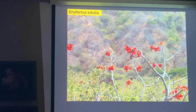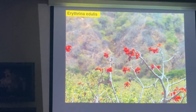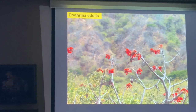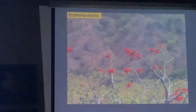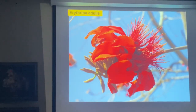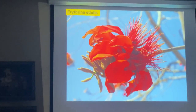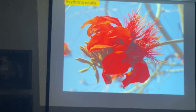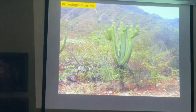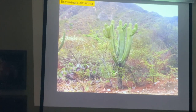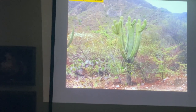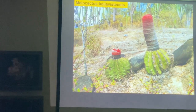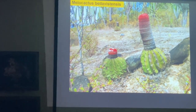Erythrina is a very common genus that grows from Mexico all the way to South America with different species. It's the same as the coral tree that you have here, Erythrina crista-galli. And there's a lot of cactus in this area, from Haageocereus altissimus and of course Melocactus.